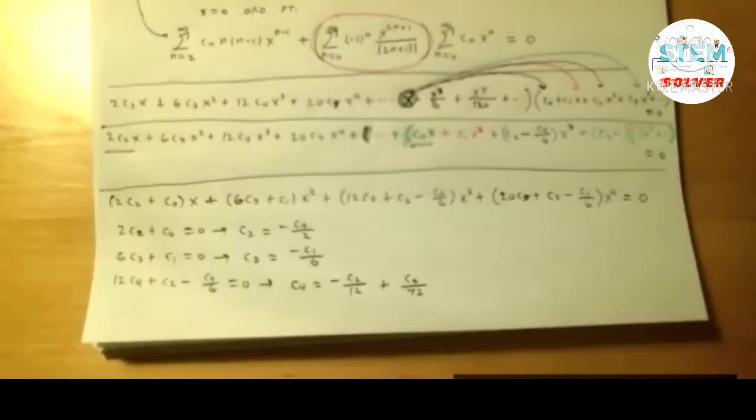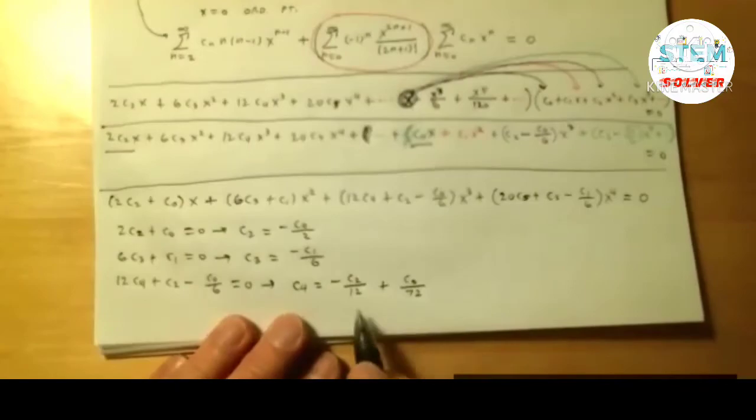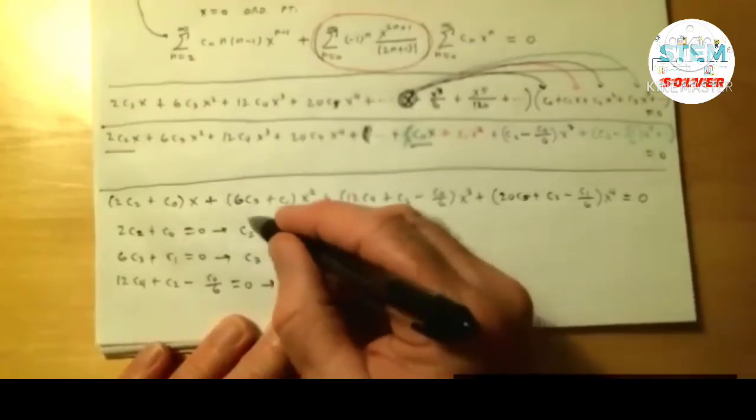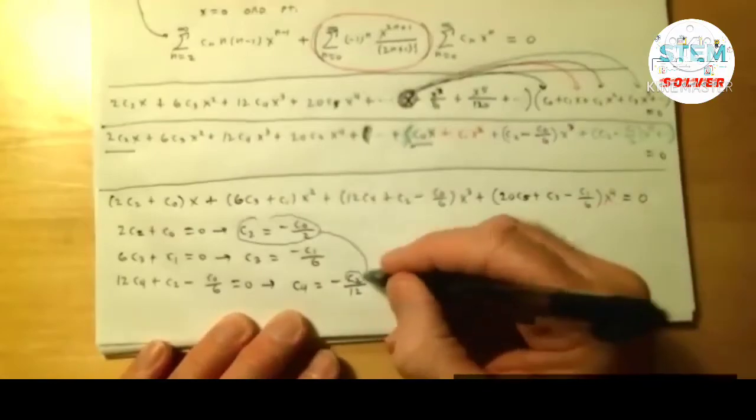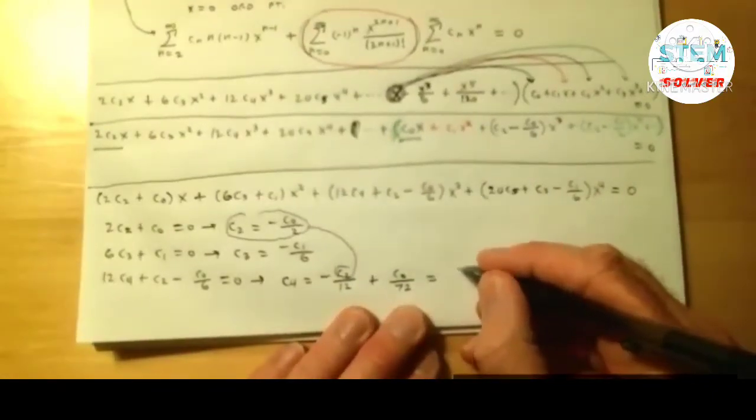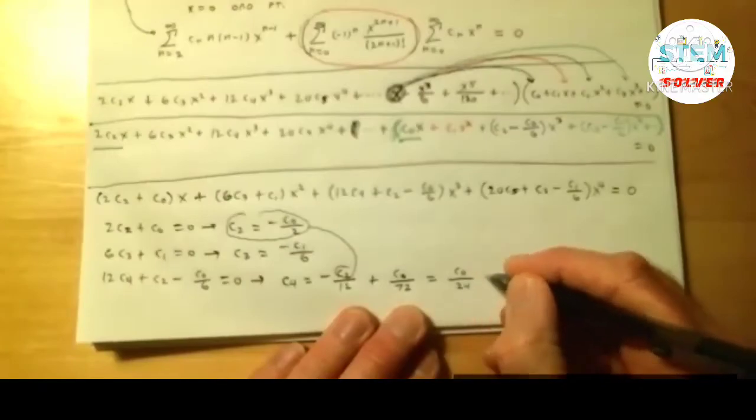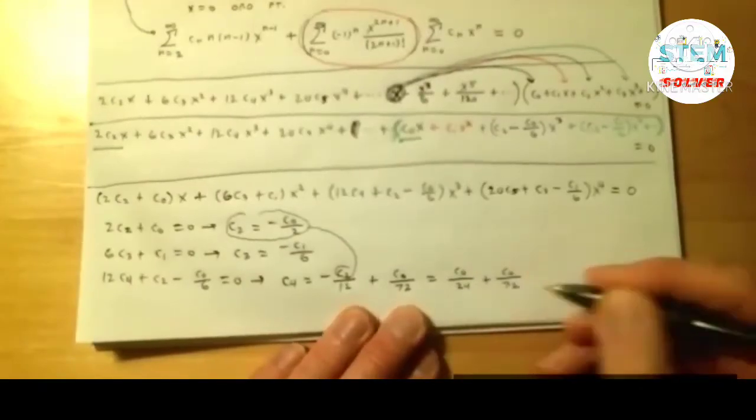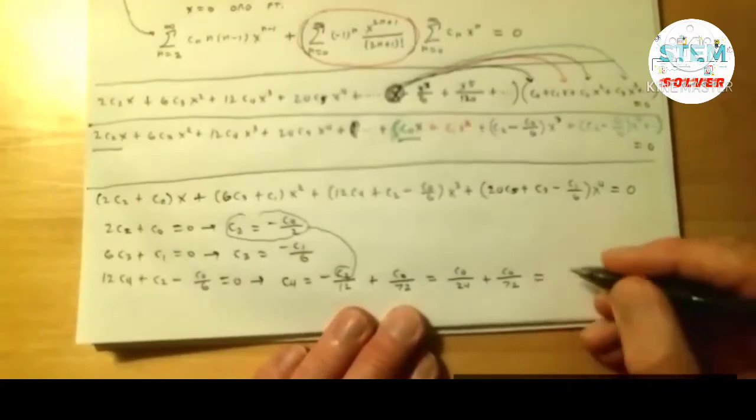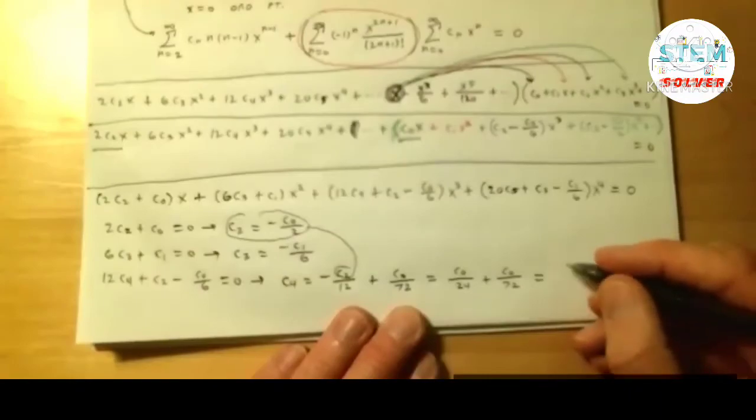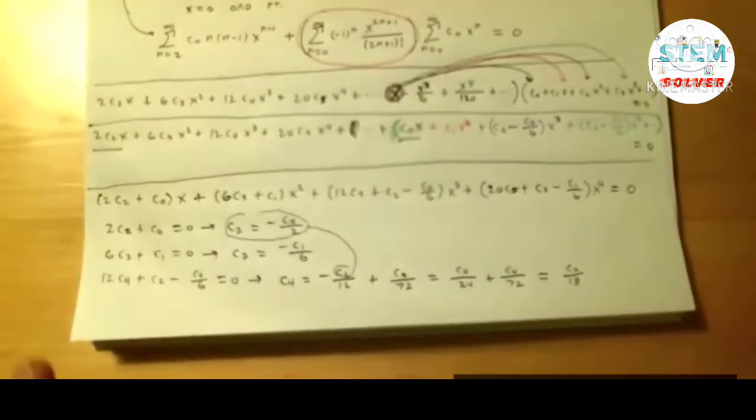Next one's going to be a little different here. So we have 12c4 plus c2 minus c0 over 6. Coefficient of x cubed, coefficient of x cubed over here is 0. So let's set that equal to 0. And again, we're going to solve for c4. So you're going to get negative c2 over 12 plus c0 over 72. So, you notice that one of these, we already know. The c2 here, you're going to plug into here. So what that's going to give us is that it's going to be a positive c0 over 24 plus c0 over 72. That's going to be 4 over 72. That's c0 over 18, hopefully.